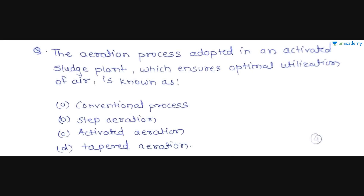The next question is: the aeration process adopted in an activated sludge plant which ensures optimal utilization of air is known as — Option A is conventional process, Option B is step aeration, Option C is activated aeration, and Option D is tapered aeration.